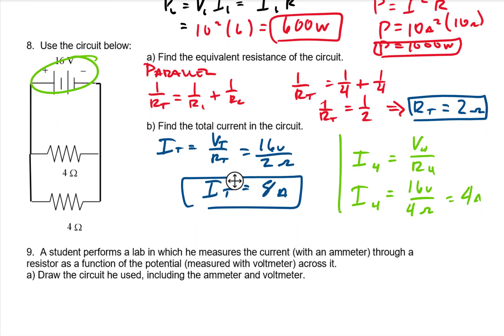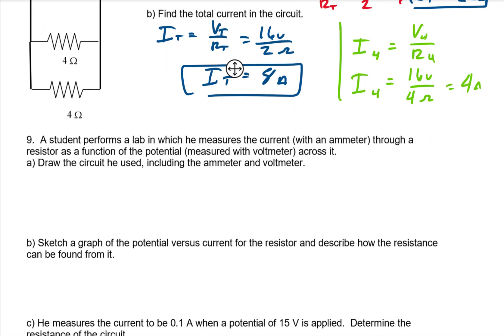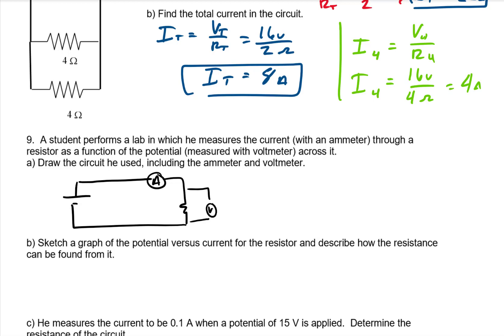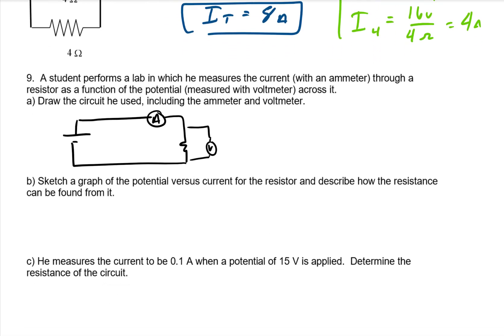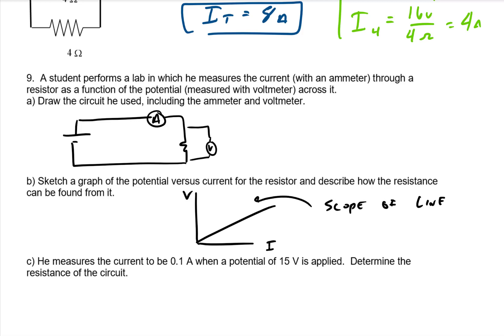A student performs a lab measuring current through a resistor as a function of voltage. Draw the circuit including an ammeter and voltmeter. The battery connects to a resistor; the ammeter goes in-line so it measures current through the resistor, and the voltmeter goes across the resistor to measure voltage. To find resistance graphically, change the voltage by adding batteries, plot voltage versus current, and the slope of that straight line equals the resistance.